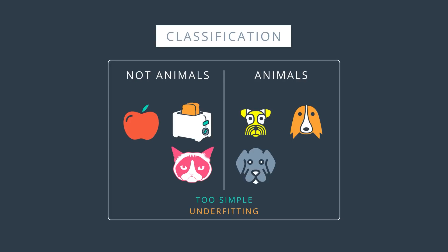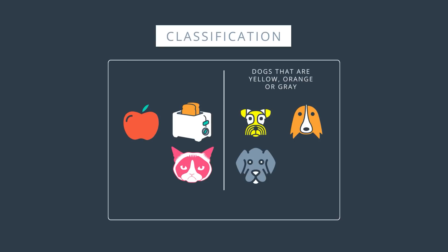Sometimes we'll refer to underfitting as error due to bias. Now what about the following rule: the ones on the right are dogs that are yellow, orange, or gray, and the ones on the left are anything but dogs that are yellow, orange, or gray. Well, technically this is correct as it classifies the data correctly. But there's a feeling that we went too specific, since just saying dogs and not dogs would have done the job.